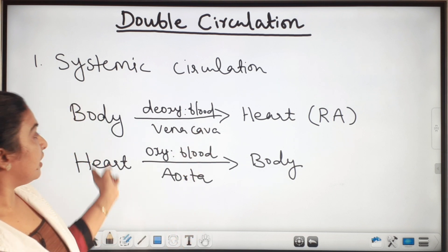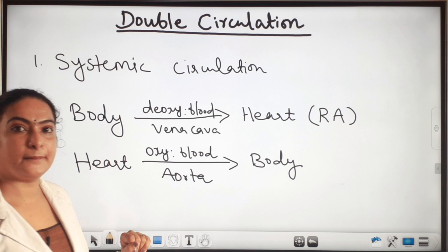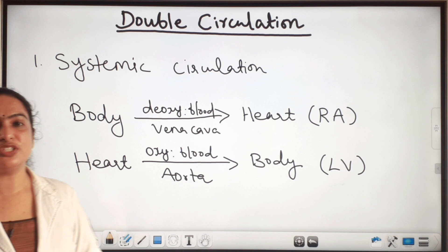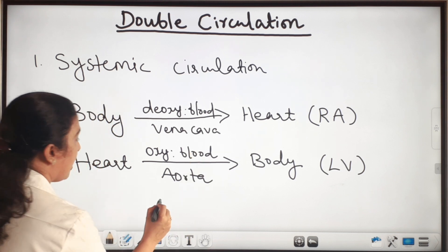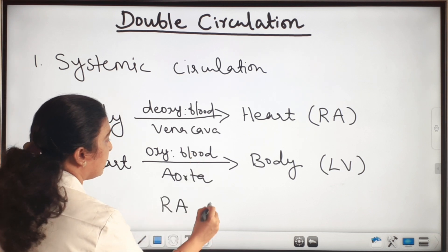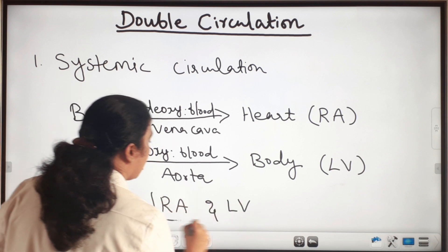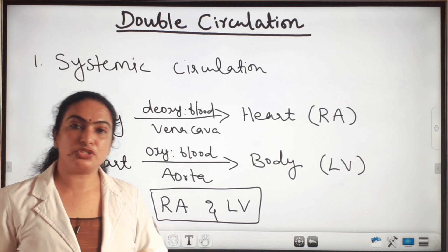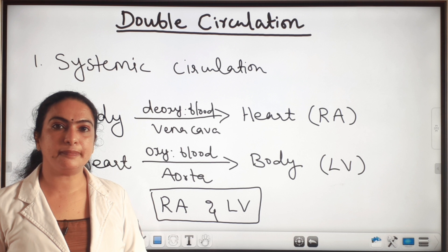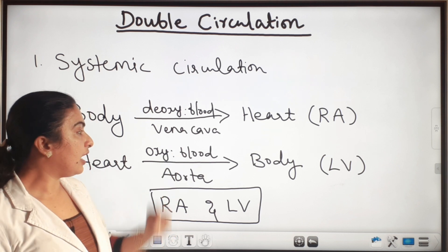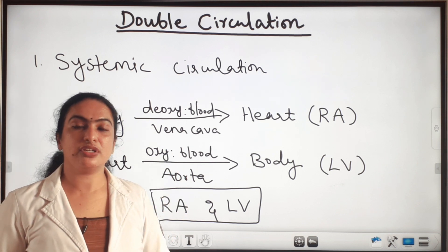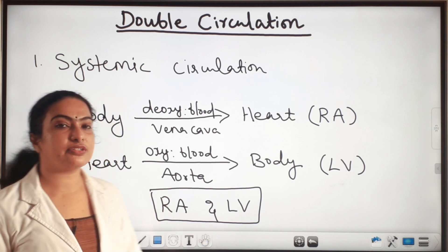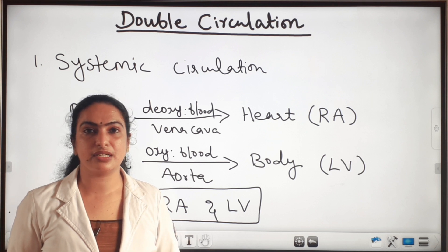Which part of the heart pumps blood to the body through the aorta? Left ventricle. So which are the chambers of the heart involved in systemic circulation? The right atrium and left ventricle — these are the two chambers involved in systemic circulation. The two blood vessels involved are the main vein, vena cava, and the main artery, aorta.